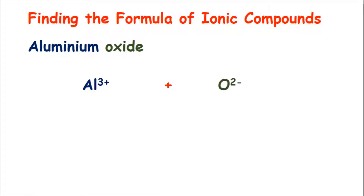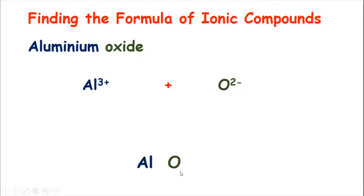To find the formula of ionic compounds I like to use what I call the crossover method. For the crossover method you have to write these two ions in a line with a bit of space in between. So we've got Al3+ here, the plus in the middle and O2- on the other side. Then you write just the symbols Al and O a bit further down, leaving quite a bit of space and also a bit of space in between the Al and the O for the number that will go there.